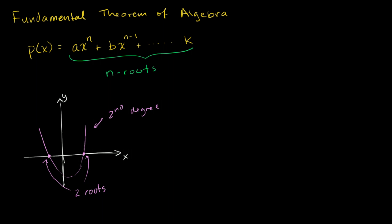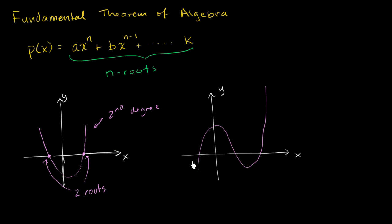You could also imagine a third degree polynomial that has three roots, and a fourth degree polynomial that looks something like this, where it has one, two, three, four roots.